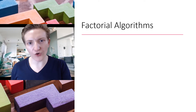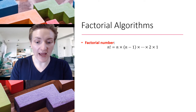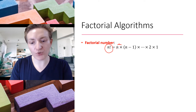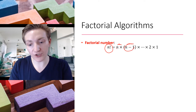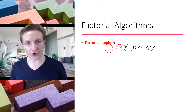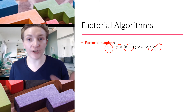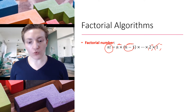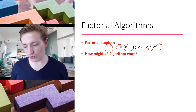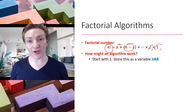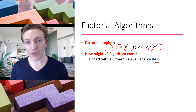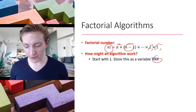So how might this factorial algorithm actually work? The factorial number is n factorial is equal to n itself, multiplied by n minus 1, and so on until we get to 2, until we get to 1. So factorial 5 is 5 by 4 by 3 by 2 by 1, and the like for other numbers. So we can think about how an algorithm might work. Let's start by defining a variable, which I'm just going to call var, and we'll define it as 1 to begin with.